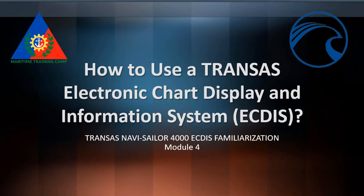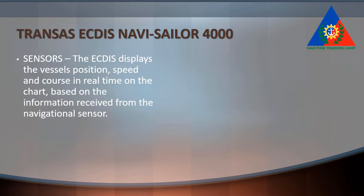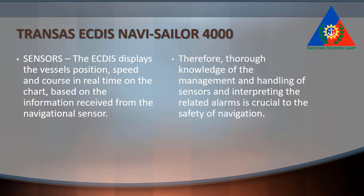Welcome training campers. In today's video you will learn how to use a vessel's Electronic Chart Display and Information System (ECDIS). This is the Navi Sailor 4000 ECDIS familiarization module number four, which is about the ECDIS sensors. The topic explains the sensors by which the ECDIS displays the vessel's position, speed and course in real time on the chart, based on information received from the navigational sensor.